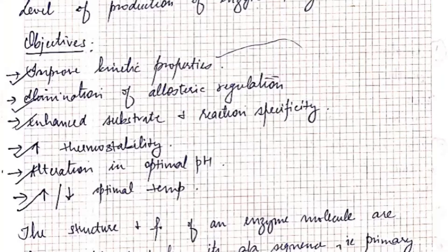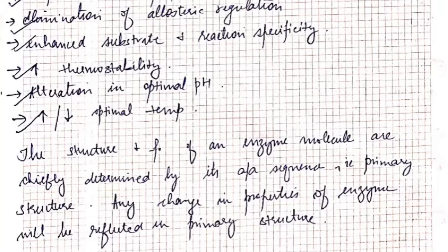Enzymes are proteins, and the main objective of enzyme engineering is to improve their kinetic properties, elimination of allosteric regulation, enhance substrate and reaction specificity, increase thermostability, or increase or decrease the optimal temperature. The structure and function of an enzyme molecule is mainly determined by the amino acid sequence, that is the primary structure. Any change in properties of an enzyme will be reflected in the primary structure.